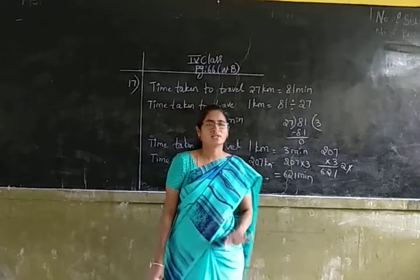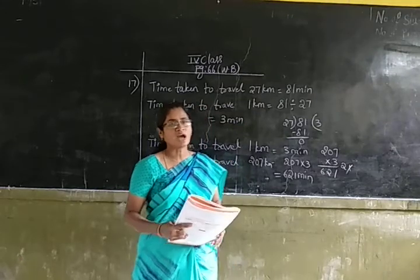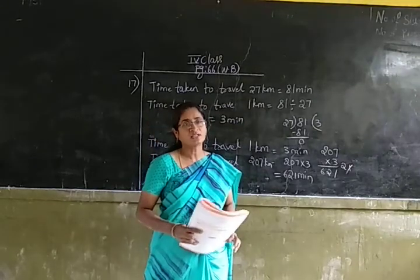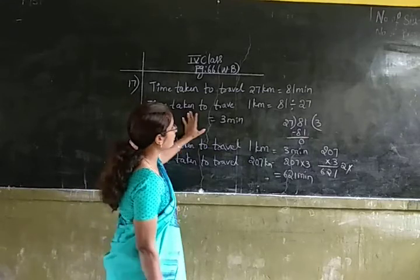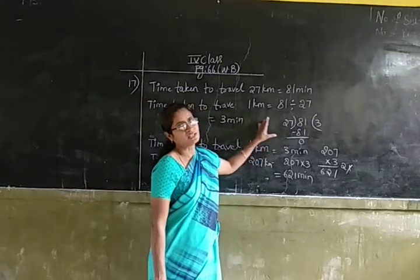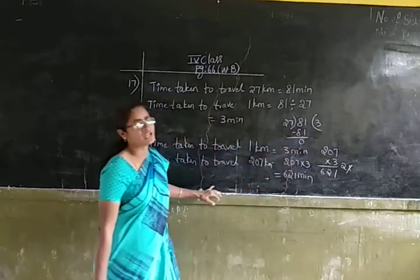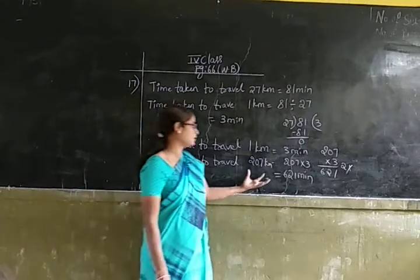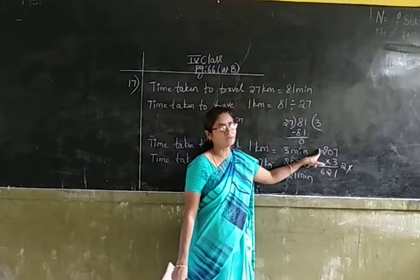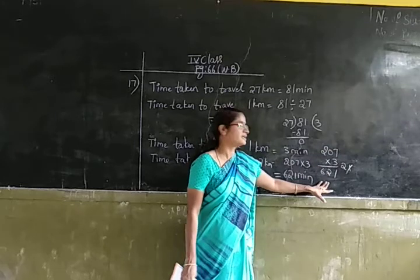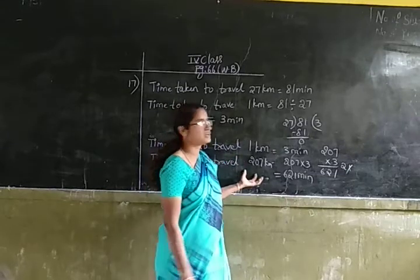Do you understand children? It is given that the vehicle takes 81 minutes to travel 27 kilometers. We need to find how many minutes the vehicle takes to travel 207 kilometers. Using division, we find it takes 3 minutes to travel 1 kilometer. Then multiplying 207 by 3, we get 621 minutes to travel 207 kilometers.